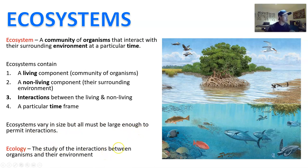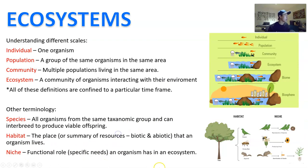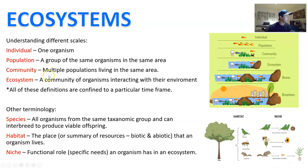The study of these interactions is what we call ecology. Understanding ecosystems at different scales is really important. At an individual level, we're talking about one organism. At a population level, we're talking about a group of the same organisms in the same area. A community is when you have different populations living in the same area — a few different species all living together. An ecosystem is when you have that community plus the environment they are in, all occurring within a time frame.